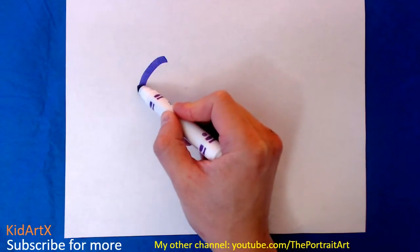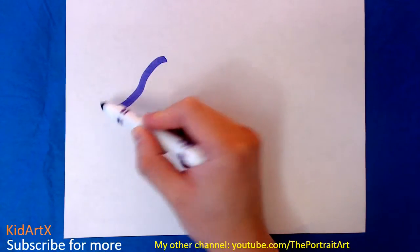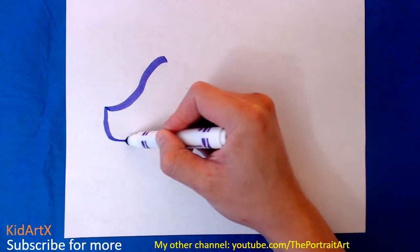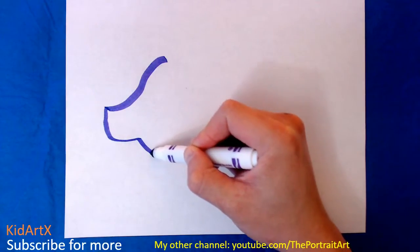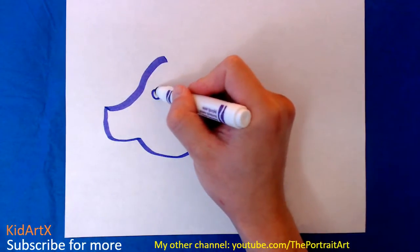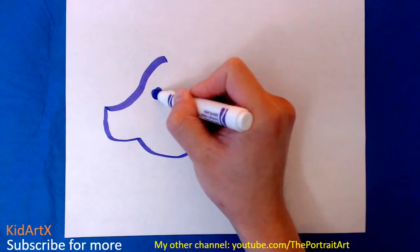Start with the tip of the head, comes down to a nose, and then curls back to finish the head. Do a dot that would be its eye.